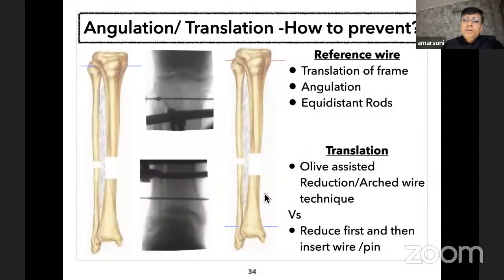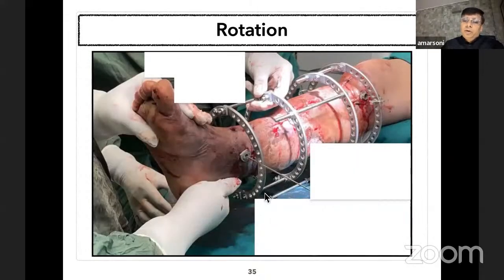Regarding how to prevent angulation and translation: inserting two reference wires parallel to the knee and ankle joint will prevent translation and angulation, provided all rods are equidistant. If rods are not equidistant, even if both reference wires are parallel to the joint line, one may have angulation at the fracture site. To prevent translation, one can use olive-wire-assisted reduction or reduce first and then insert the wire.